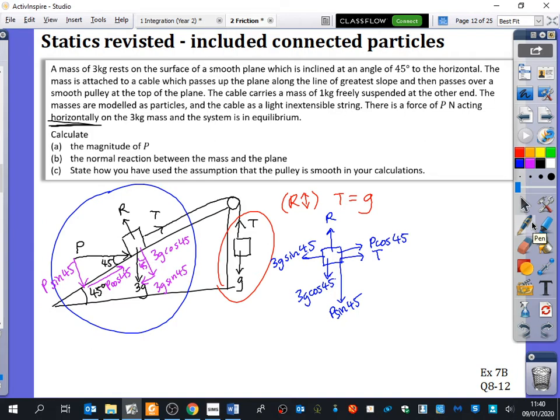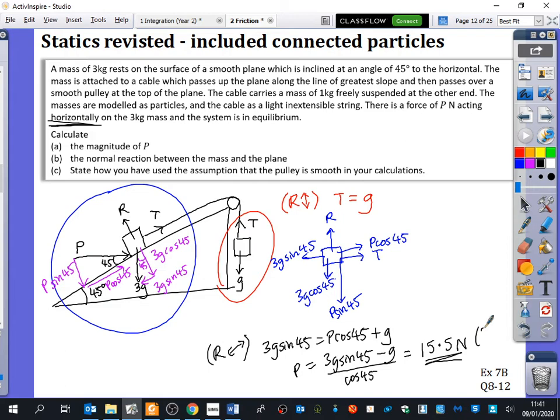So the thing it wants us to find out first is the magnitude of P. So are we best to look up and down or left and right? We're going to look at the resolving in the left and right direction. So we're now going to resolve up and down the slope. So I can see I've got 3G sine 45 is equal to P cos 45 plus T. But T is G. So I can solve this and say that P is equal to 3G sine 45 minus G divided by cos 45. And we get that P is 15.5 newtons to three significant figures.